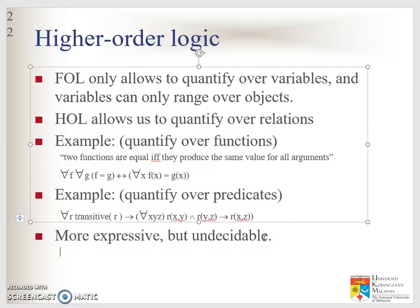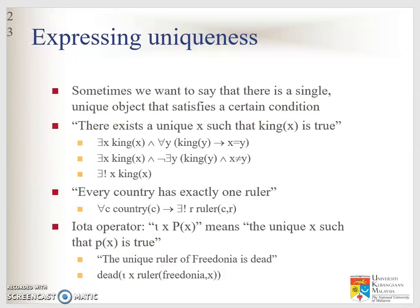How do we express uniqueness in higher order logic? Sometimes you want to say that there is a single unique object that satisfies a certain condition. For example, there exists a unique x such that king(x) is true.